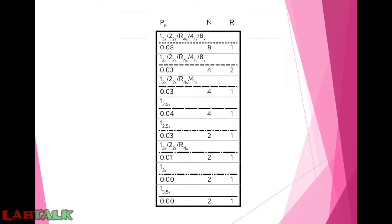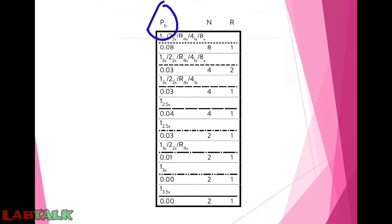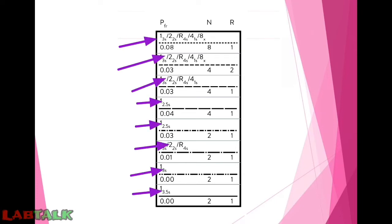Let us understand the components of this key. N is the number of controls required. R is the number of runs required. Pfr is the probability of false rejection of a QC run. The remaining entries are the QC rules which need to be followed for the particular line on which the operator specification point lies.